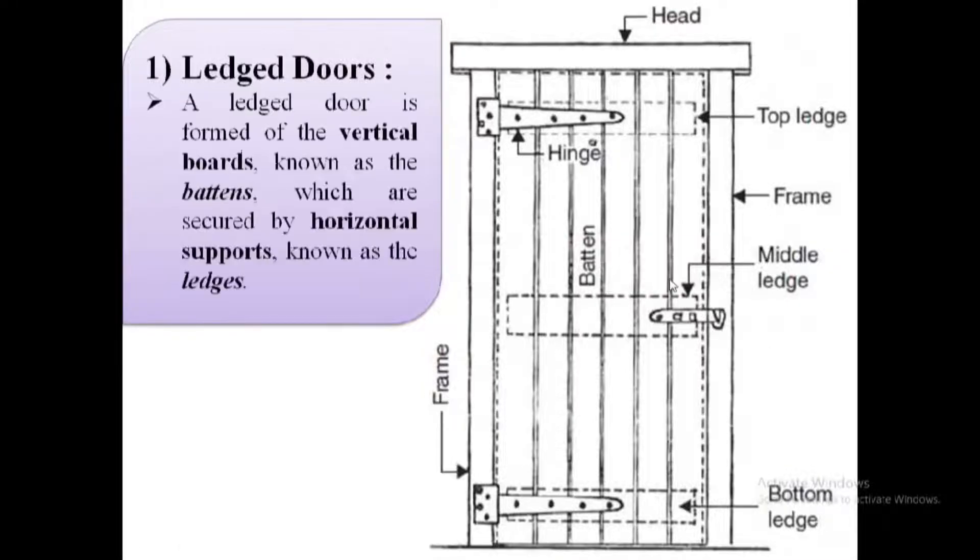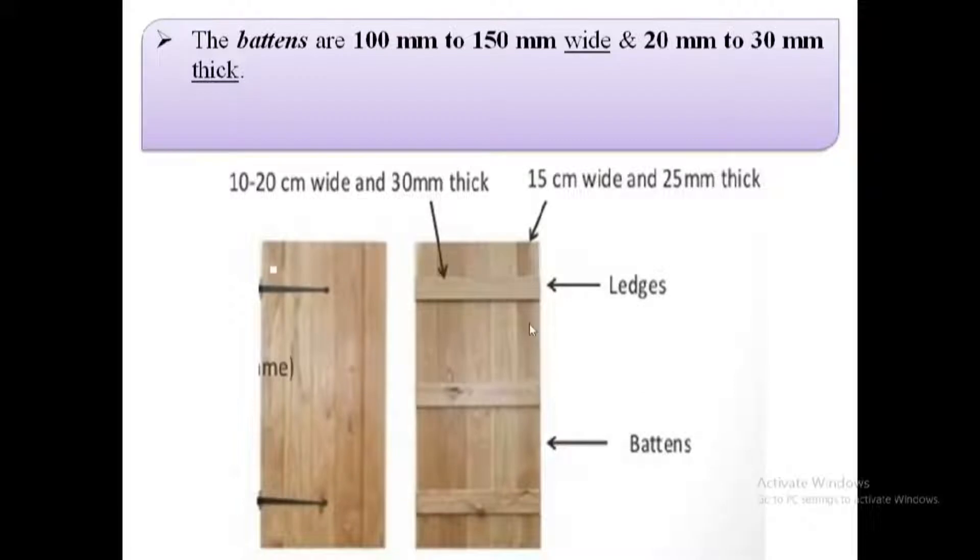Battened and ledged door. It is formed of vertical boards known as battens, which are usually fixed together by horizontal supports known as ledges. This is the simplest type of door, especially for small openings.